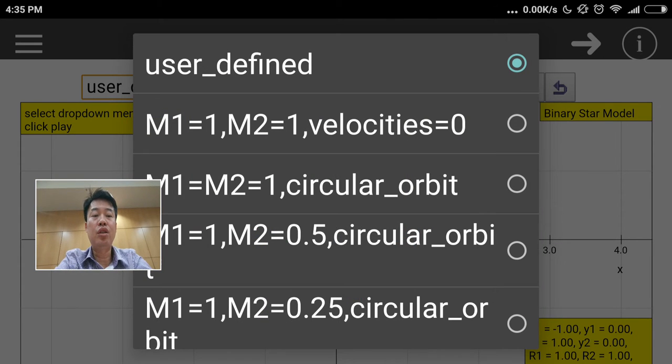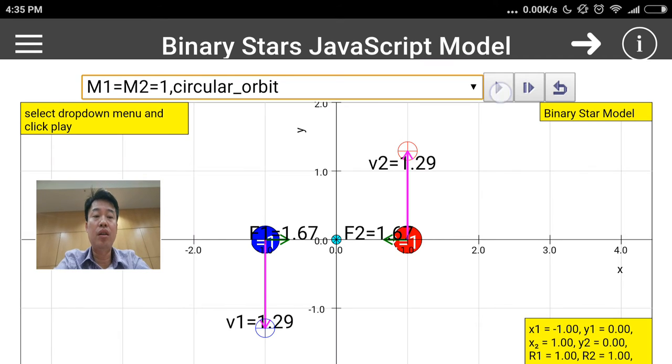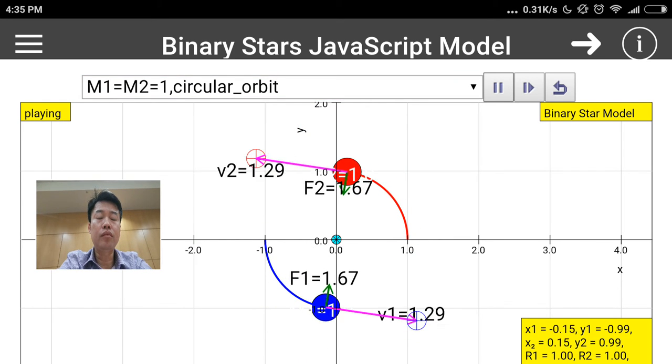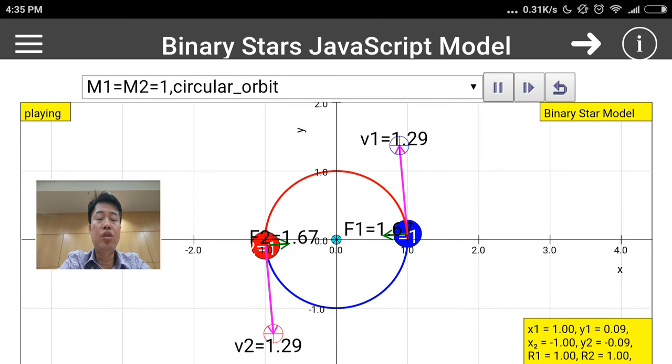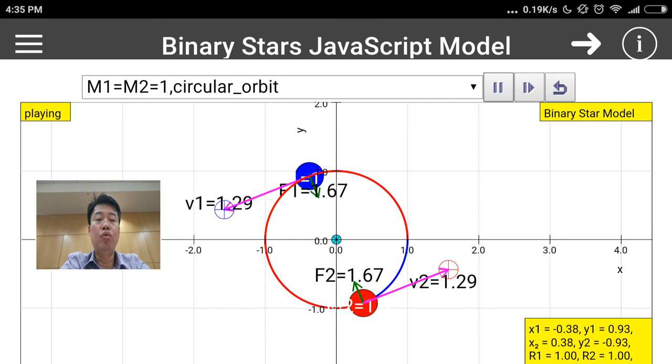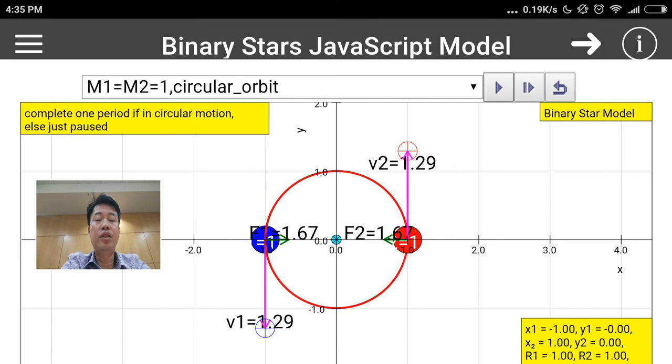With M1 equals M2 equals one circular orbit, when you have some initial speed perpendicular to the line of centers joining the two masses, you can actually have an orbit which is perfectly circular.